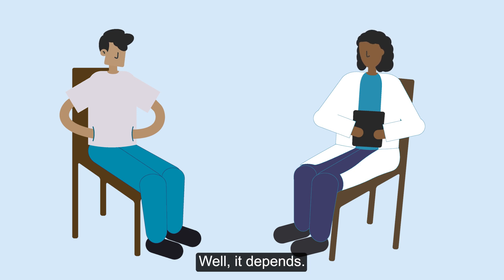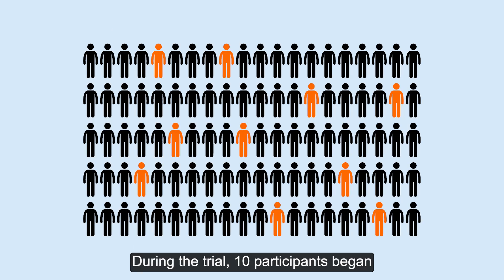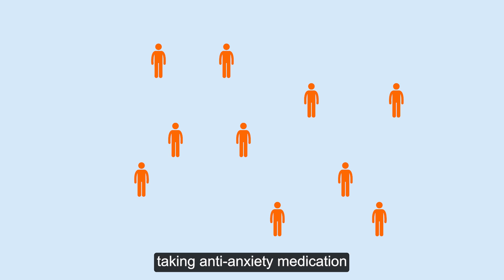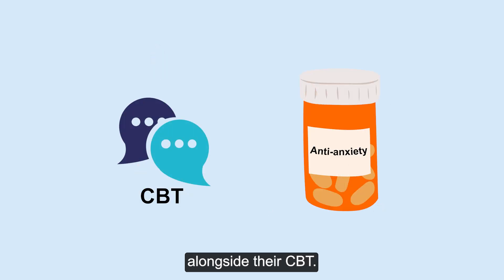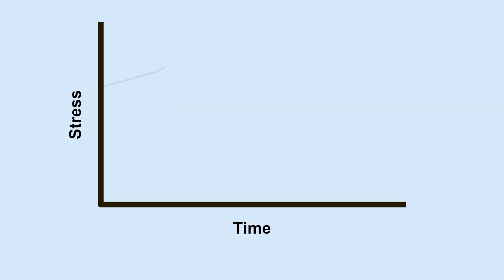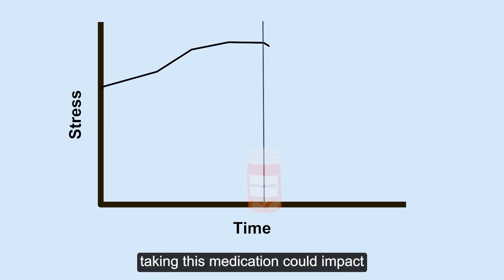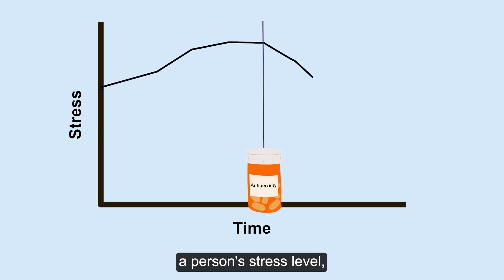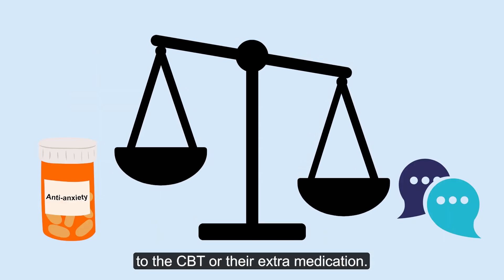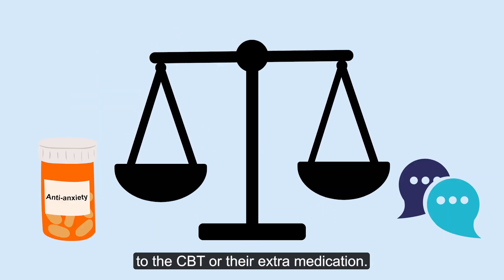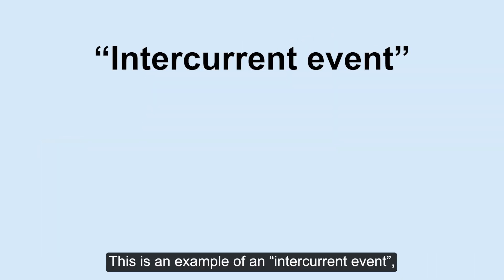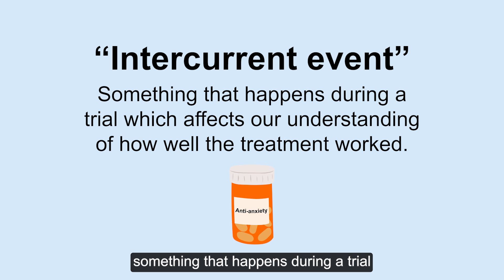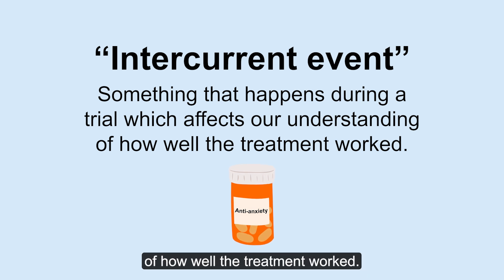Well, it depends. During the trial, 10 participants began taking anti-anxiety medication alongside their CBT. As you can imagine, taking this medication could impact a person's stress level, making it difficult to know if any improvement is due to the CBT or their extra medication. This is an example of an intercurrent event — something that happens during a trial which affects our understanding of how well the treatment worked.